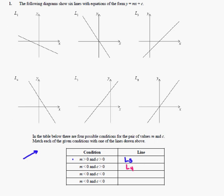The next condition: m is less than zero and c is less than zero. So we want a negative gradient with a negative y-intercept. This line is negative and it's got a negative y-intercept, so that would be L1.